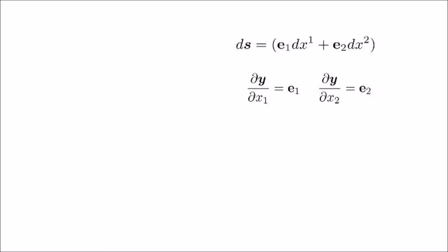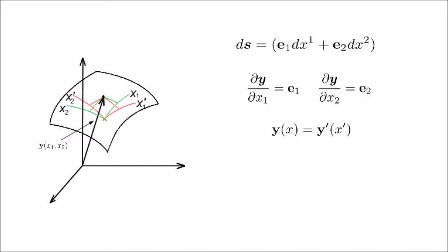Recall the definition of the basis e. e1 is the partial derivative of the vector y with respect to x1. Similarly, e2 is dy over dx2. Since the vector y defines a point on a surface and changing the coordinate system from x to x' does not shift the point with respect to the surface, y is therefore preserved under coordinate transformation. Hence, y of x equals y' of x', where for brevity we let x stand for x1, x2 and same for x'.